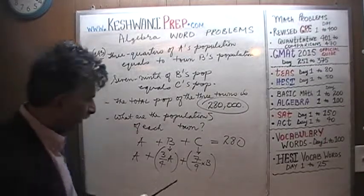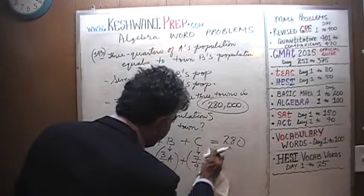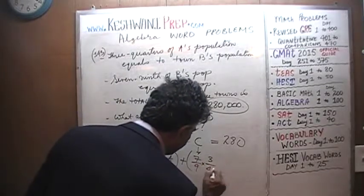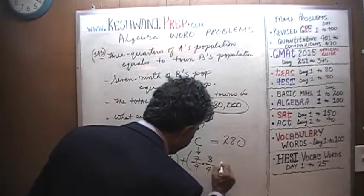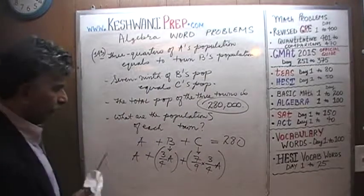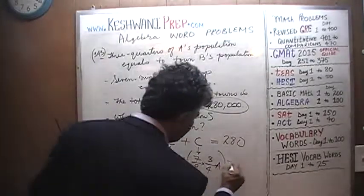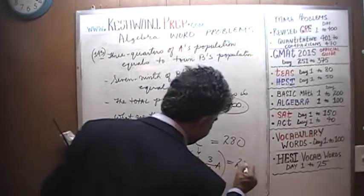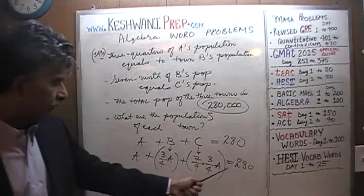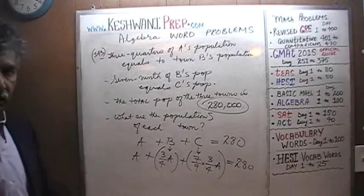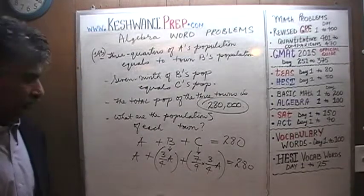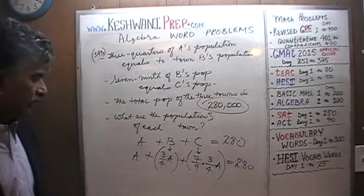In place of B we are going to put down three quarters of A — three quarters of A. And all of that has to equal 280. That simple equation is what we have to solve to figure out the population of A, and once we have the population of A we can figure out B and C.